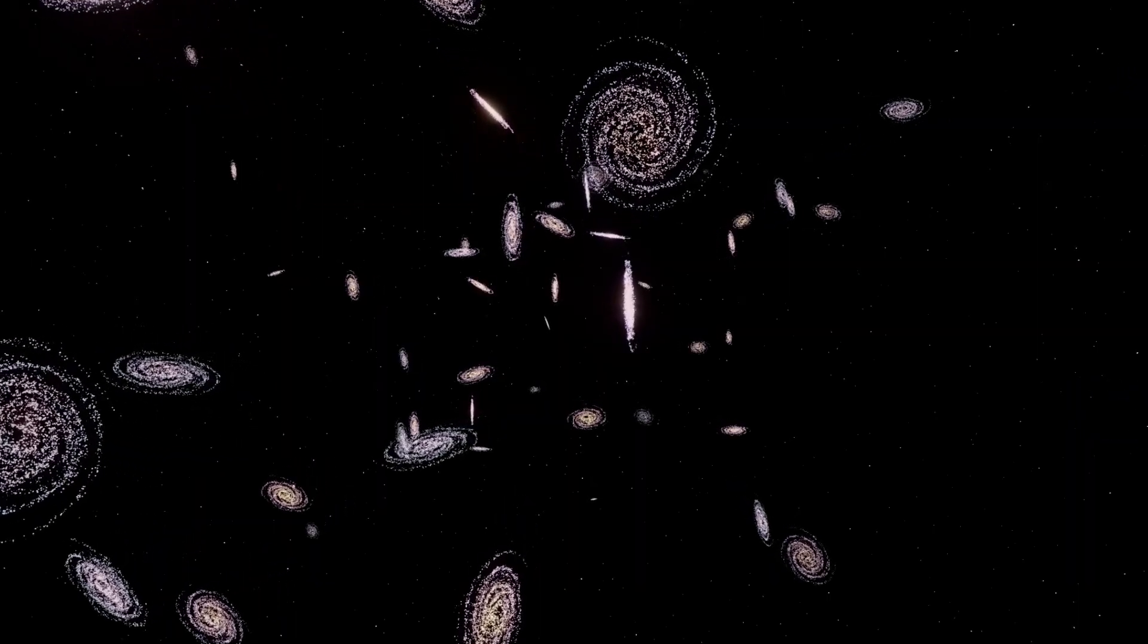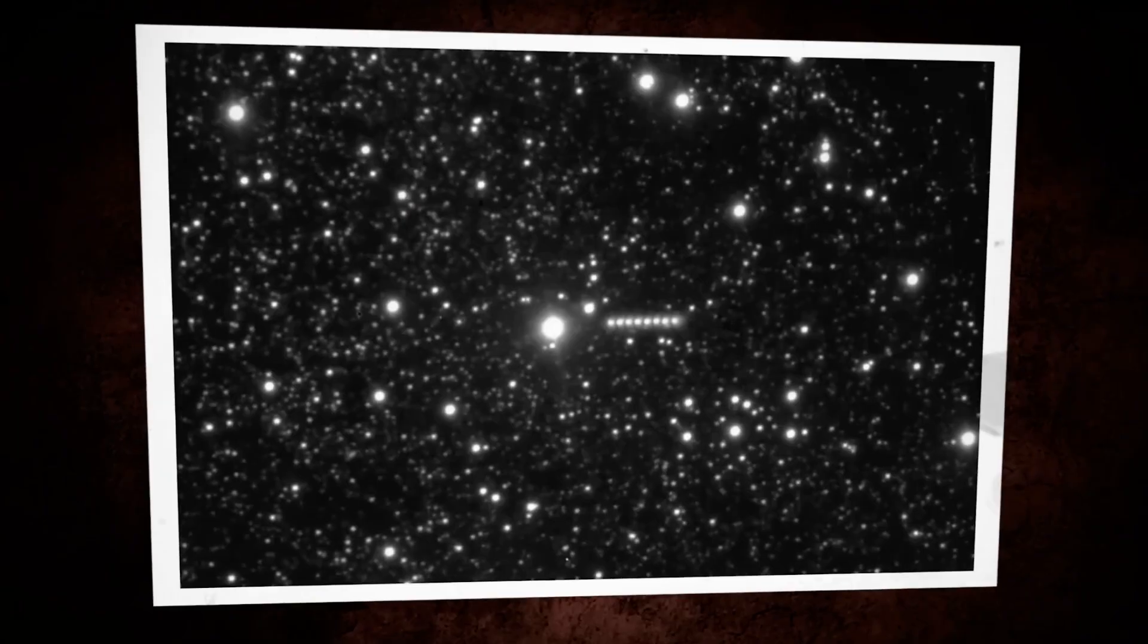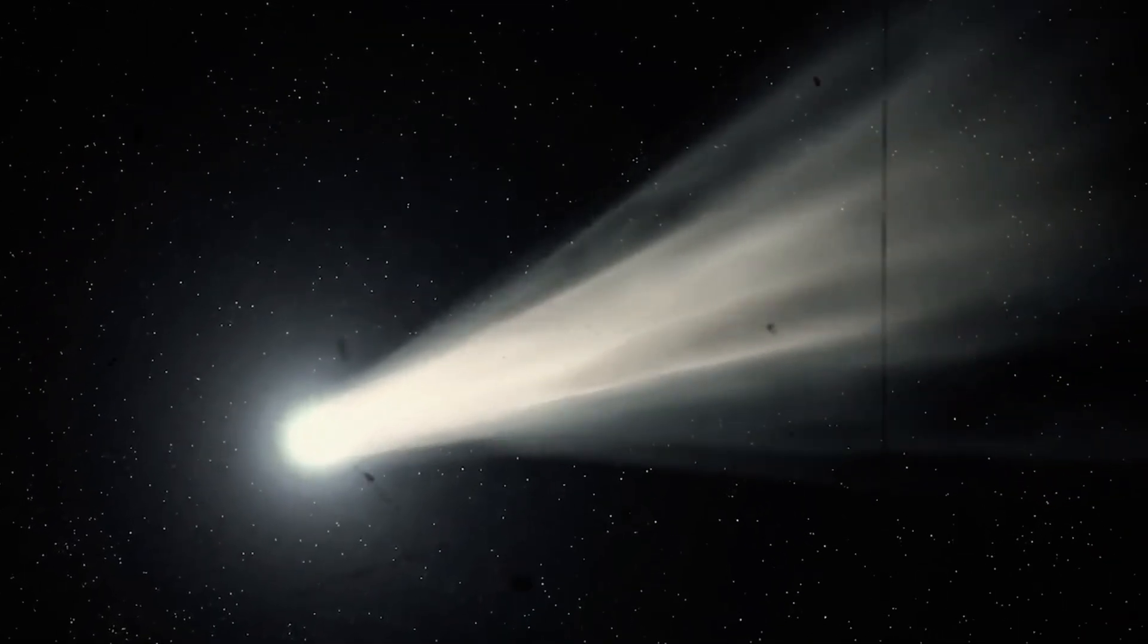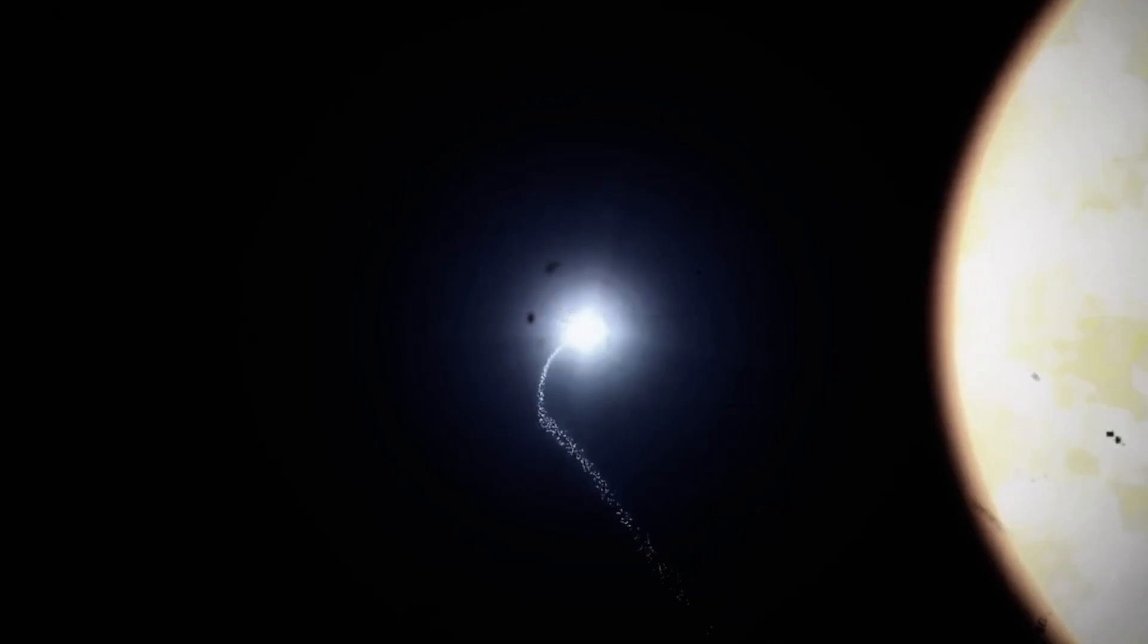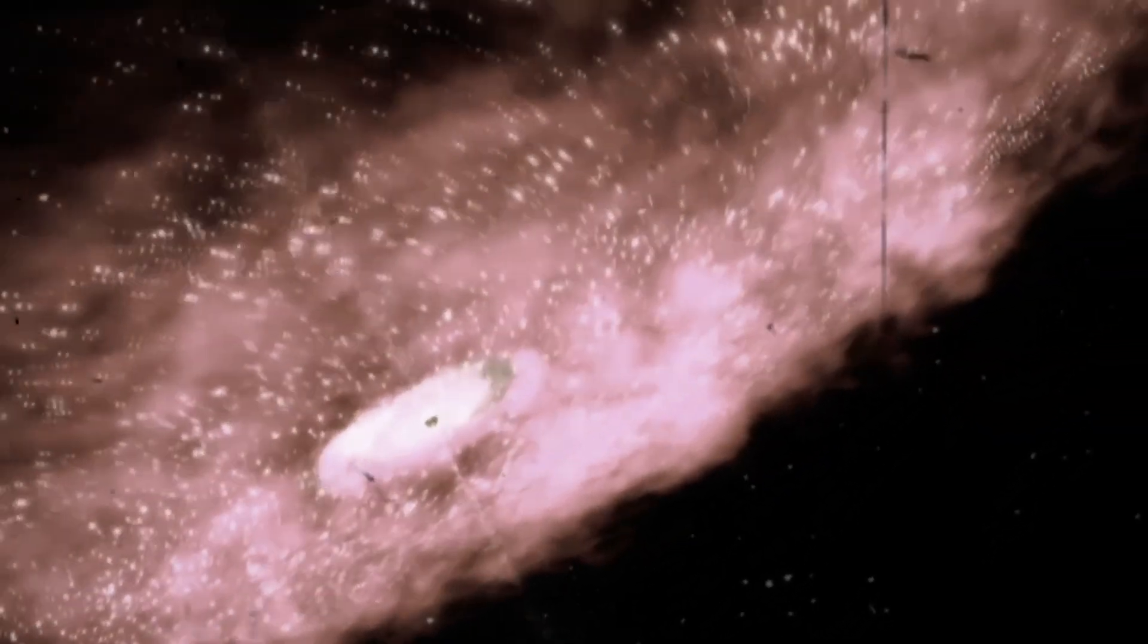However, in cosmic terms, these timescales are almost trivial. Gamma-ray bursts can release more energy in mere milliseconds than every star in our galaxy combined. Cosmic rays tear through planetary orbits at nearly light speed. Even the most massive black holes can collide and merge in a thousandth of a second, unleashing gravitational waves that ripple across the cosmos before humanity can even register their existence.